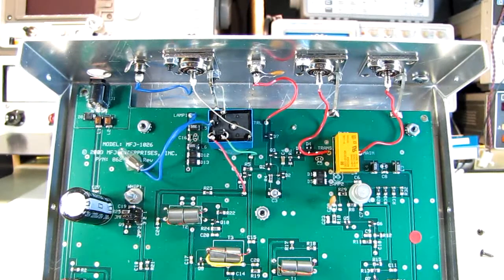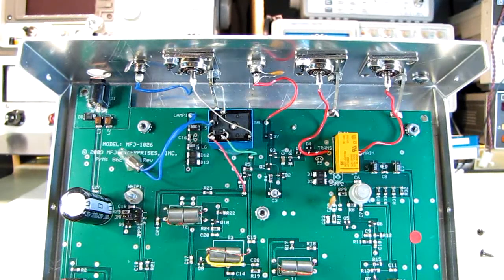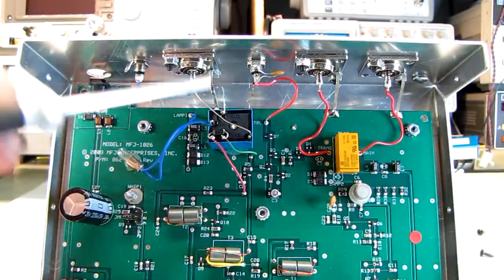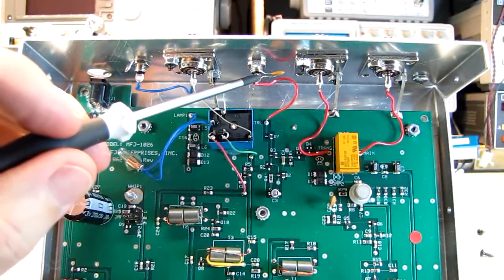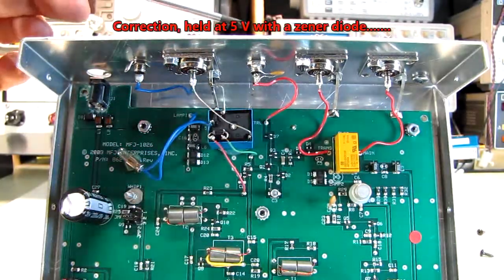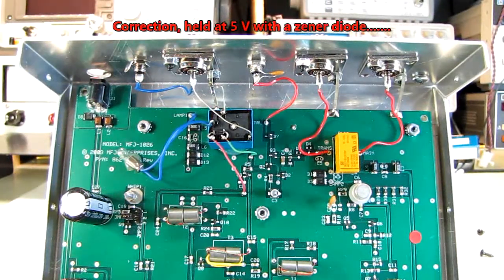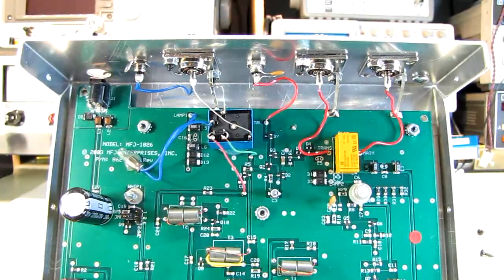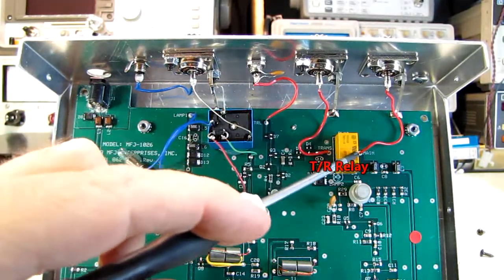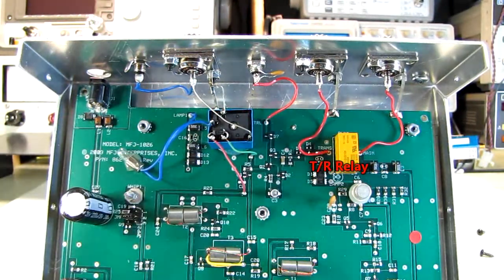While I was at it, I powered it up and tested the transmit-receive relay. This is just floating at 12 volts through a resistor, and you ground this terminal to switch over to transmit. Well, I grounded the other end of my cable, and the little yellow relay here did not change, did not engage.